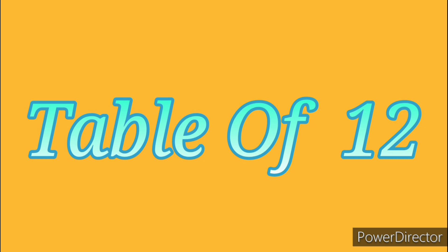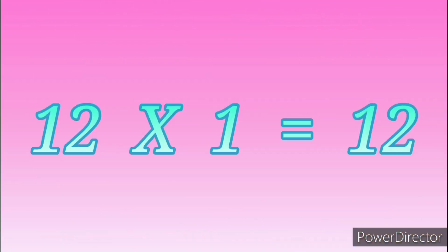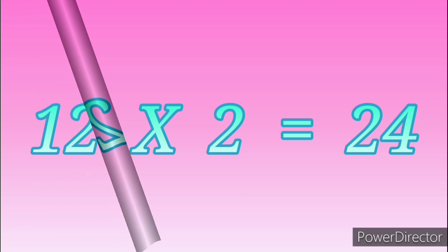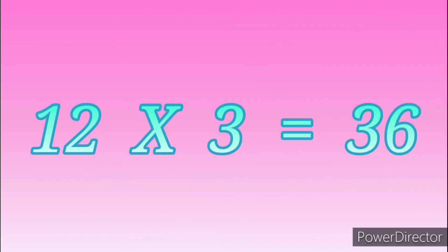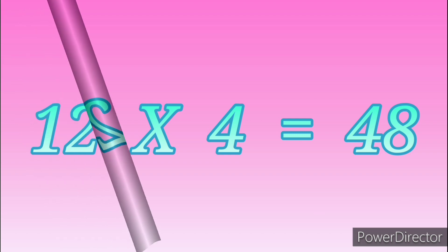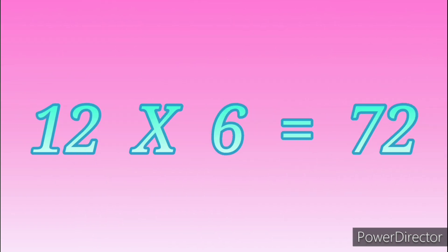Table of Twelve. Twelve ones are twelve. Twelve twos are twenty-four. Twelve threes are thirty-six. Twelve fours are forty-eight. Twelve fives are sixty. Twelve sixes are seventy-two.